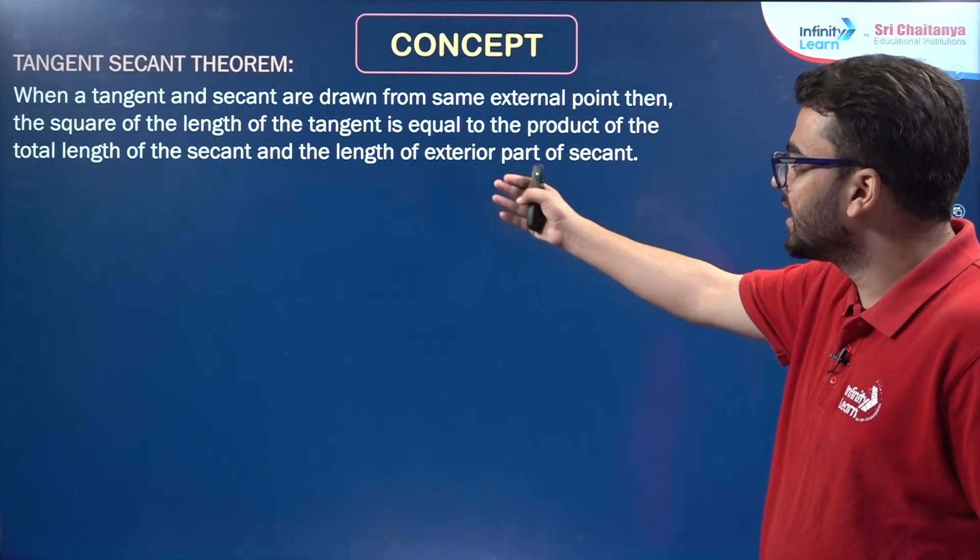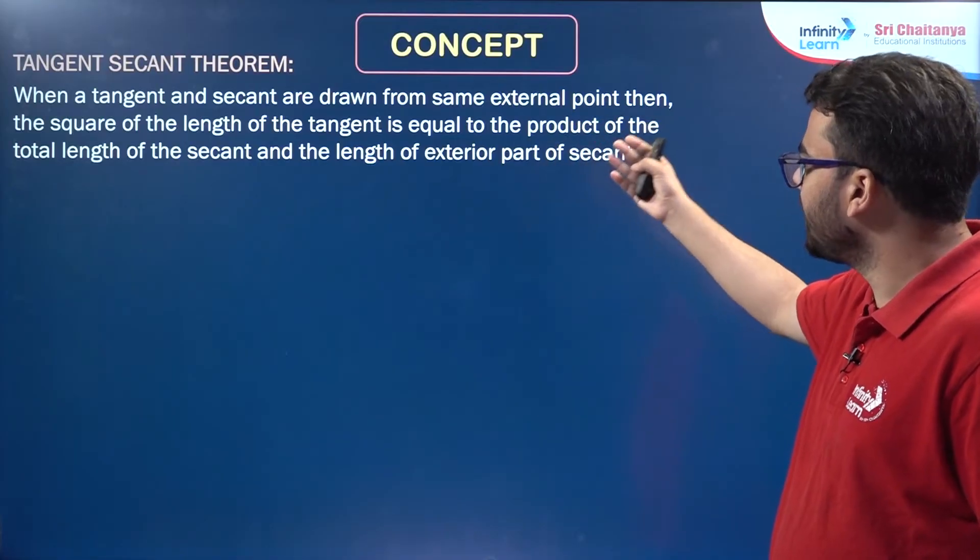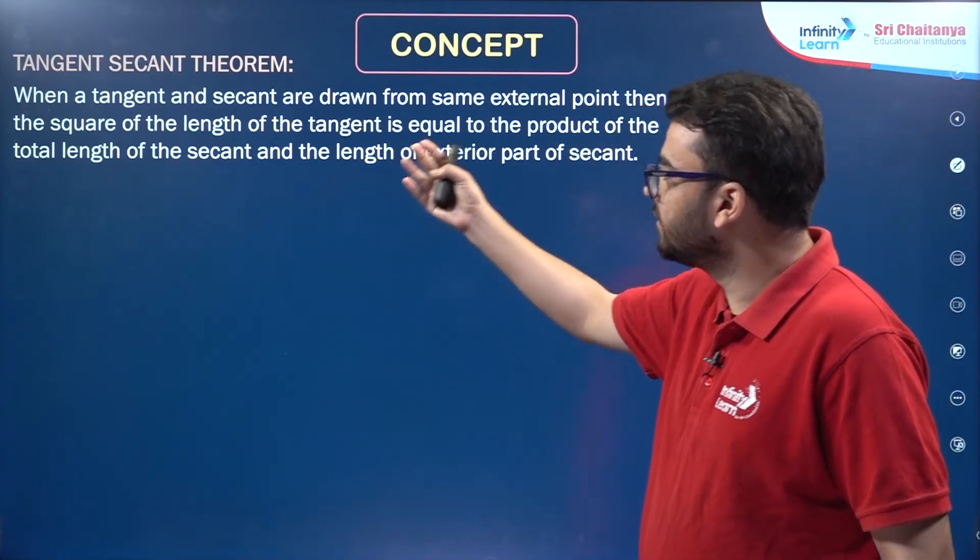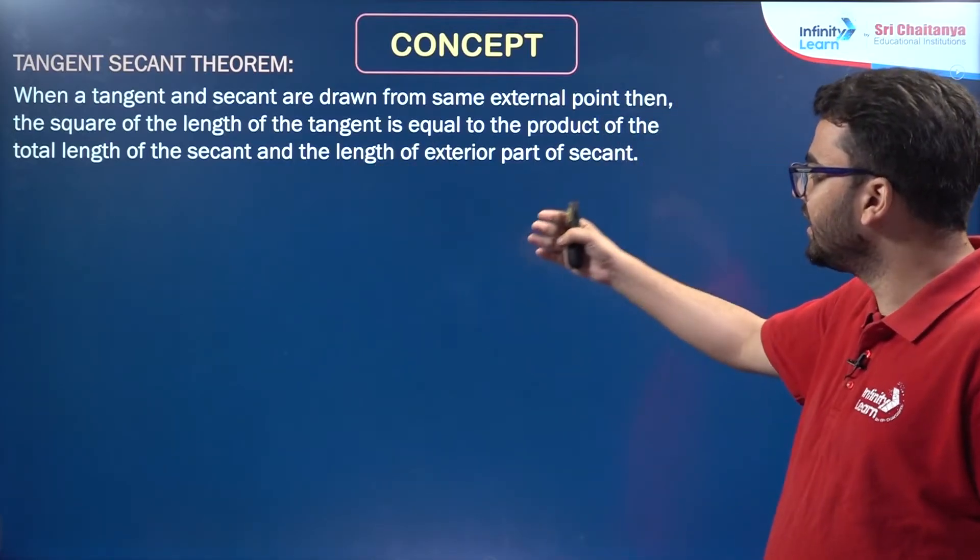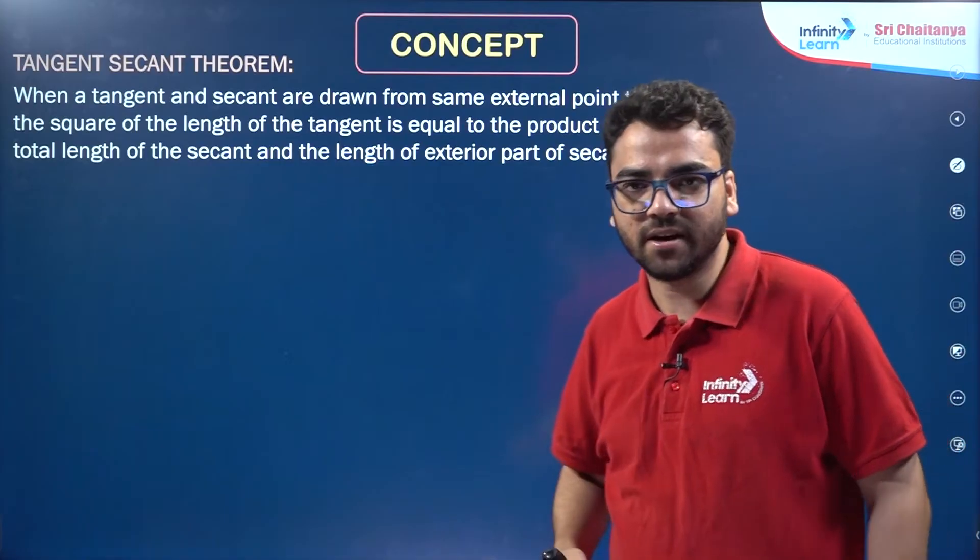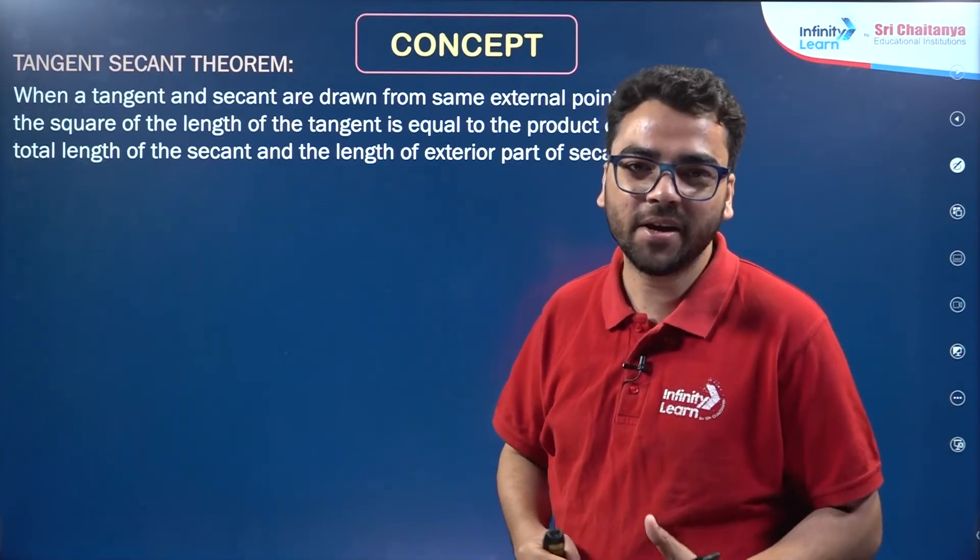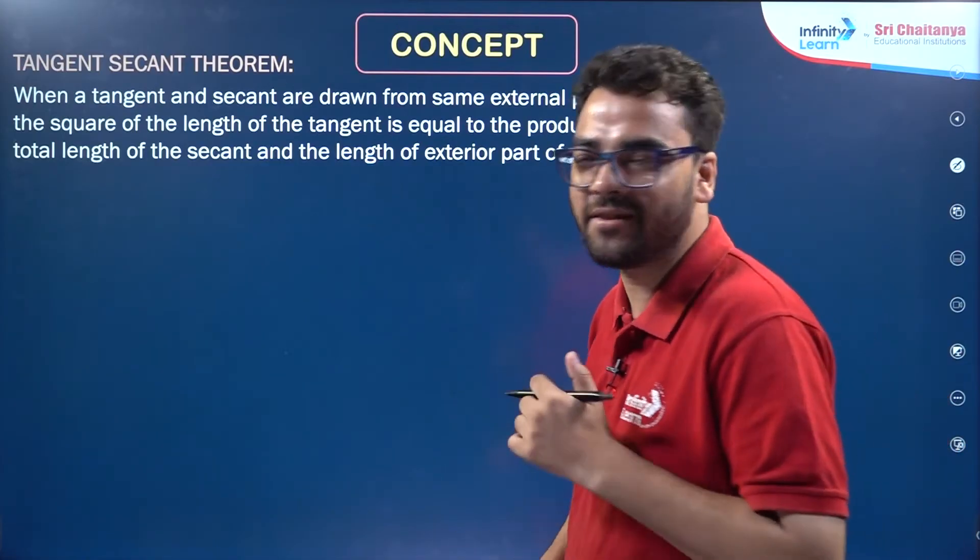When a tangent and secant are drawn from the same external point, the square of the length of the tangent is equal to the product of the total length of the secant and the length of the exterior part of the secant. The statement might be a bit twisted, so let's see it using a figure.